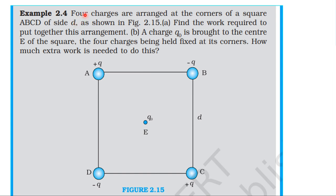From the NCERT textbook, topic electrostatic potential and capacitance, example 2.4: four charges are arranged at the corners of a square ABCD of side d. First, find the work required to put together this arrangement. Second, a charge q-naught is brought to the center E of the square, the four charges being held fixed at the corners - how much extra work is needed? Corner A: +q, corner B: -q, corner C: +q, corner D: -q.